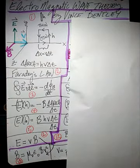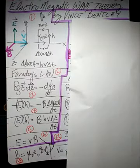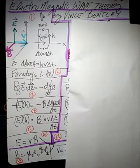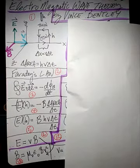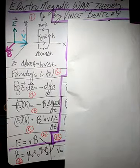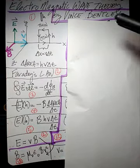Today we're going to be looking at electromagnetic wave theory, and we're going to derive the fact that electric and magnetic waves travel at the speed of light. So let's get started.